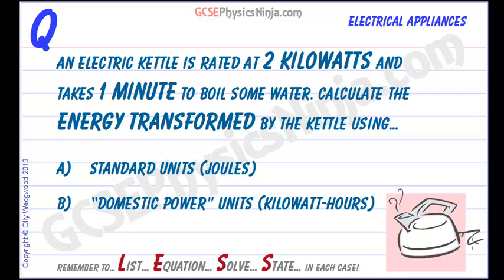An electric kettle is rated at 2 kilowatts and takes one minute to boil some water. We have to calculate the energy transformed by the kettle — first using standard units (joules, seconds), and then using domestic power units, which involve kilowatts and hours, resulting in an energy unit of kilowatt hours. We'll use the List-Equation-Solve-State method to structure the calculation.